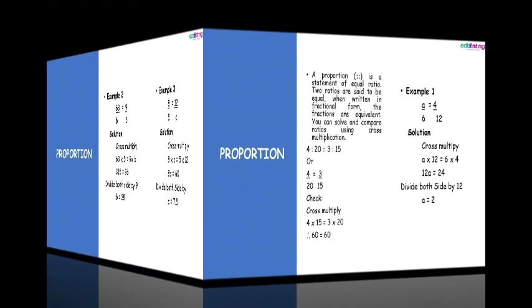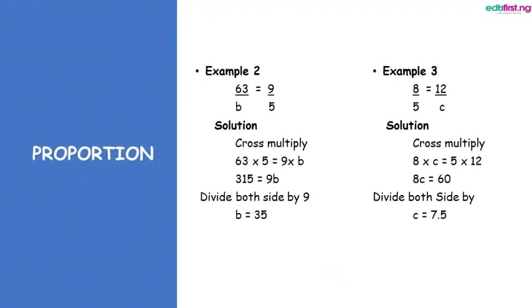Example 2: 63 over b equals 9 over 5. We cross multiply: 63 multiplied by 5 equals 9 multiplied by b, giving us 315 equals 9b. Dividing both sides by 9, b equals 35.